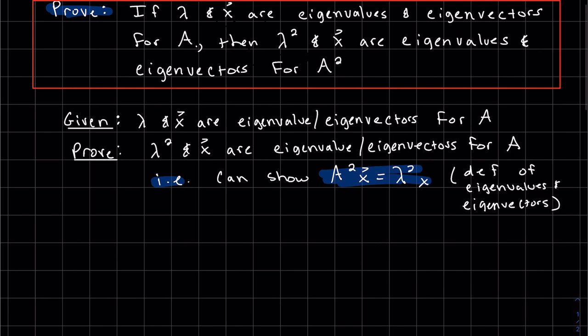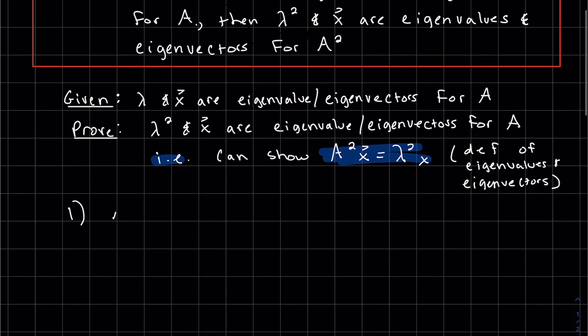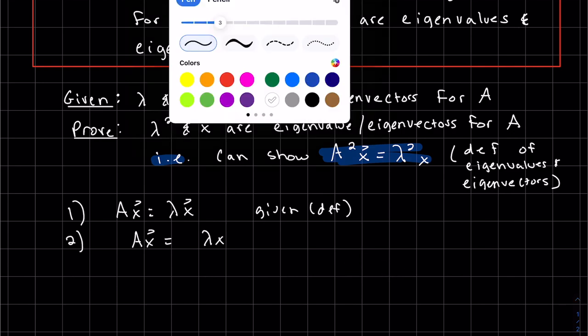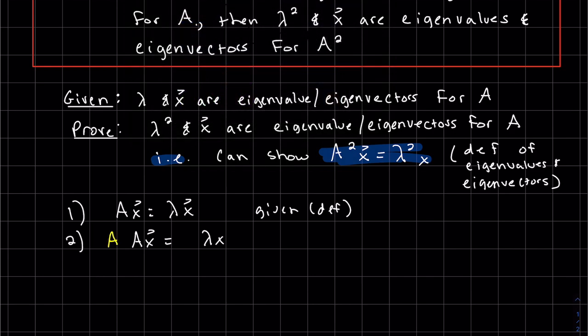So our first step is just to use the given. Well, we're given lambda and x are eigenvalue eigenvectors for A. So we can start off with that definition. Ax equals lambda x, given. My next step is I'm going to manipulate this by multiplying the left side by A.